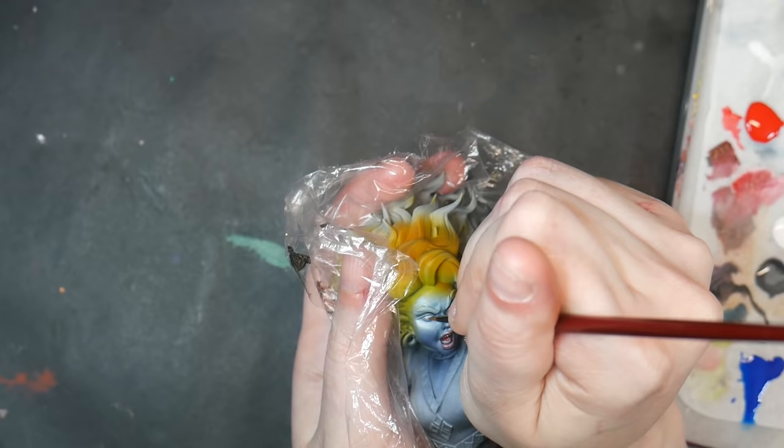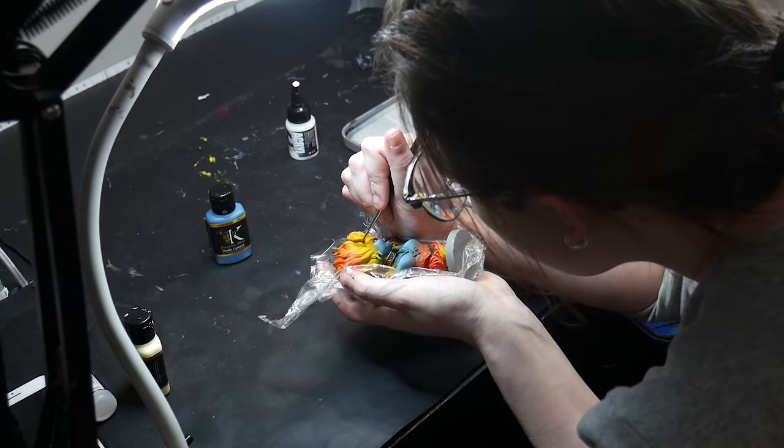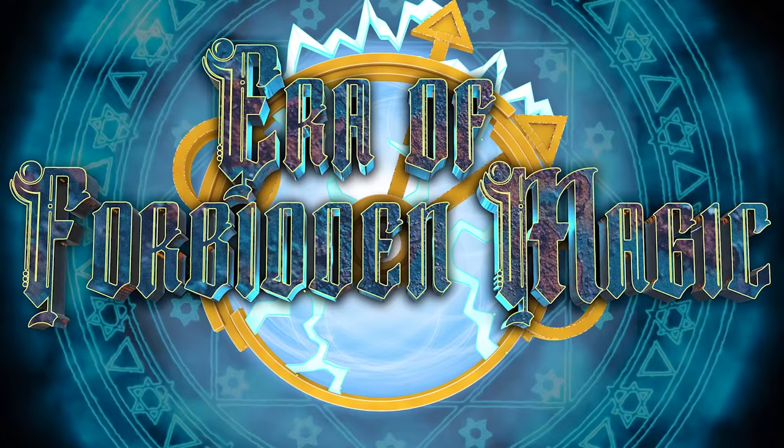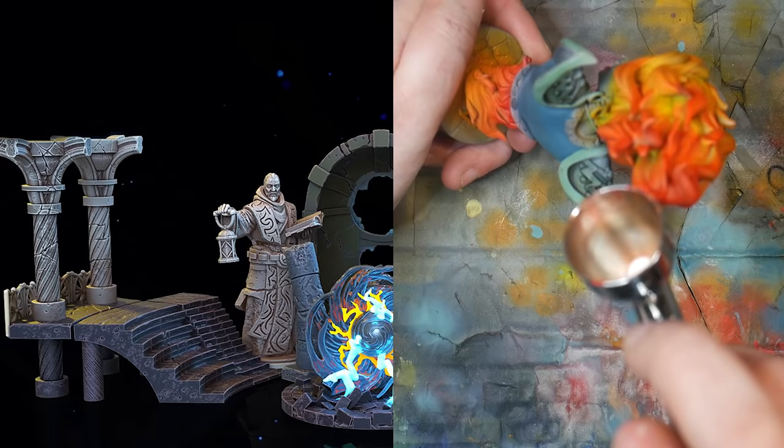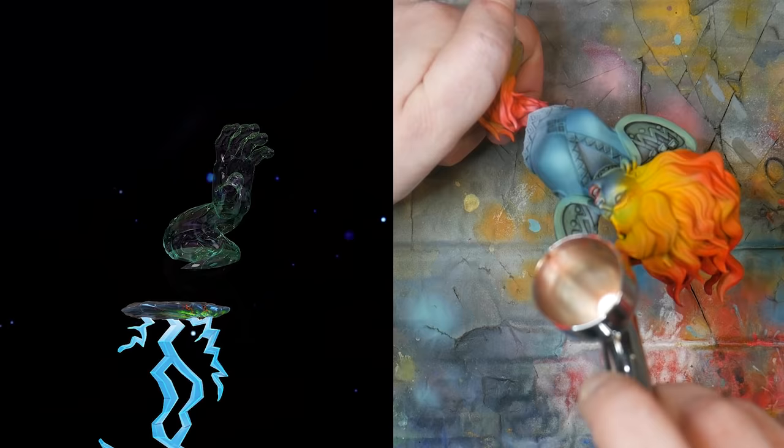Let's take a moment to talk about this week's sponsor, Crippled God Foundry. This week, I'm painting this Fire Sorceress bust from Crippled God Foundry's March release, Era of Forbidden Magic. In this month's release, you'll find 20 detailed miniatures, including various spellcasters, familiars, twisted arcane creatures, terrain, and spell effects to bring your tabletop experience to life.